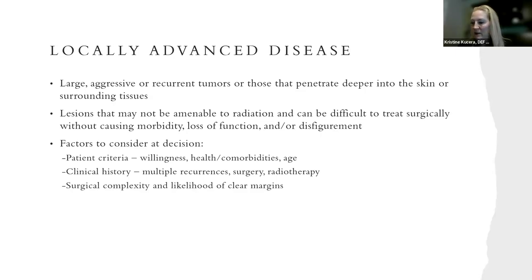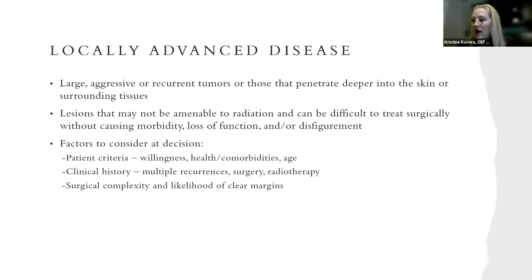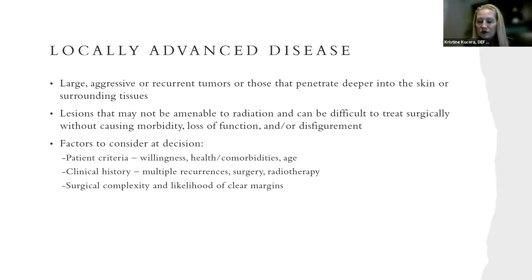The NCCN has a risk stratification that determines treatment options for local basal cell based on risk factors for recurrence. Recurrence is a key consideration, along with location, size, and borders. If it's a poorly defined basal cell, if it's recurrent, or if the patient is immunosuppressed, those are important risk factors.